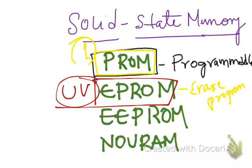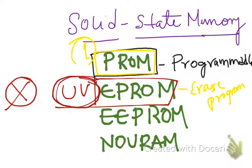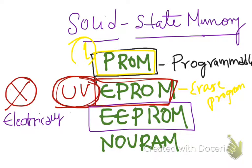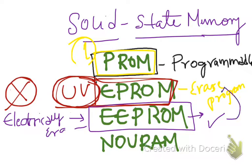The major disadvantage of EPROM is it takes time for UV exposure, and whenever you are erasing it, the entire contents in the ROM get erased, which means you do not have any control over which bits you want to erase. These are the two major drawbacks of EPROM. When you use an EEPROM, which stands for Electrically Erasable and Programmable ROM, it can be erased electrically from your system and you can reprogram it, helping us overcome the difficulties of the EPROM.